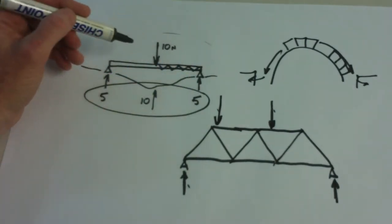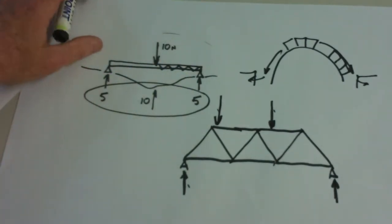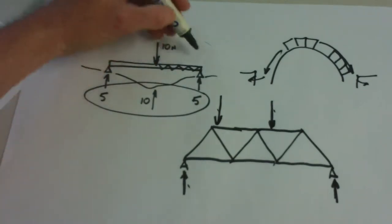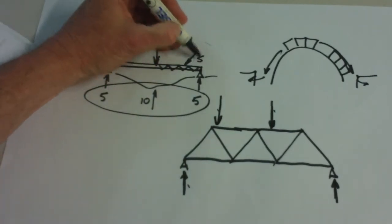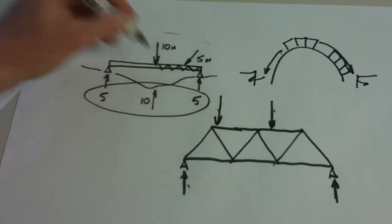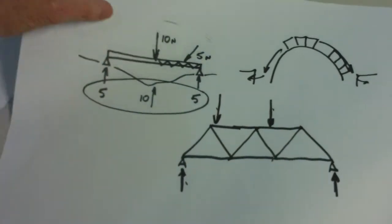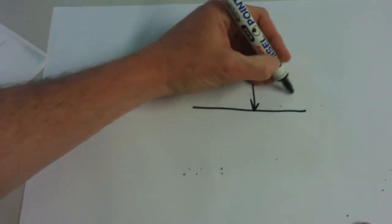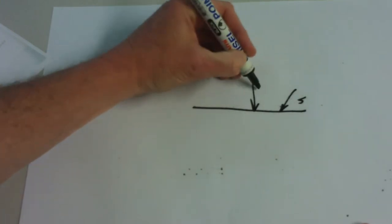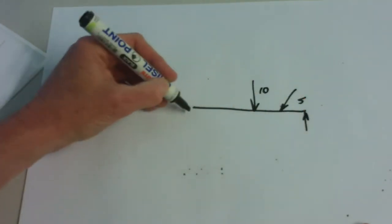Every force in that case is vertical. But what if we introduced an angled force, something coming in on a slight angle at one point — say five newtons? If that's the case, we have now introduced horizontal forces into the scheme. So not only do we have ten coming down, we've got a five coming in over here, and now it's no longer five and five at the supports.